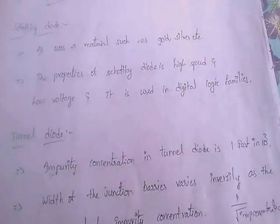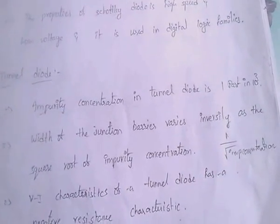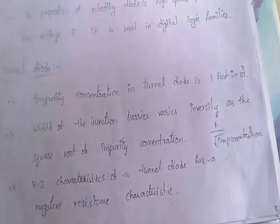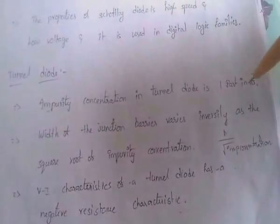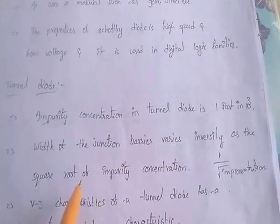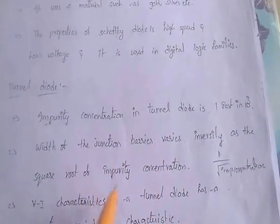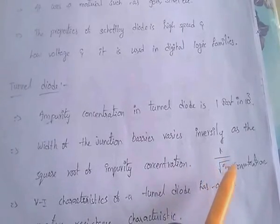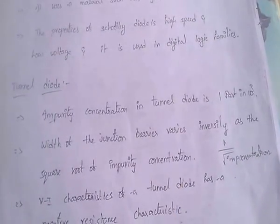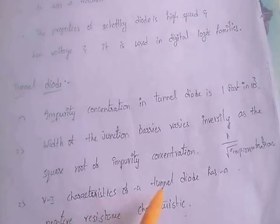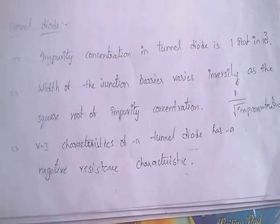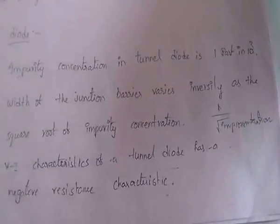Regarding the tunnel diode: the impurity concentration in a tunnel diode is one part in 10 to the power 3. The width of the junction barrier varies inversely as the square root of impurity concentration. The V-I characteristics of the tunnel diode exhibit a negative resistance characteristic — very important.